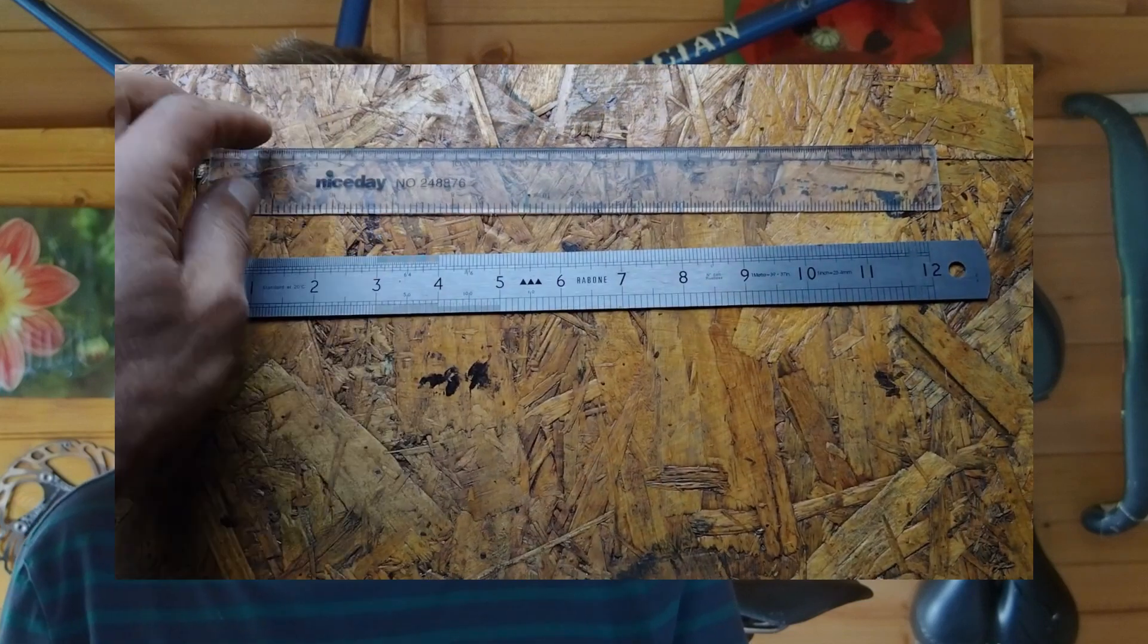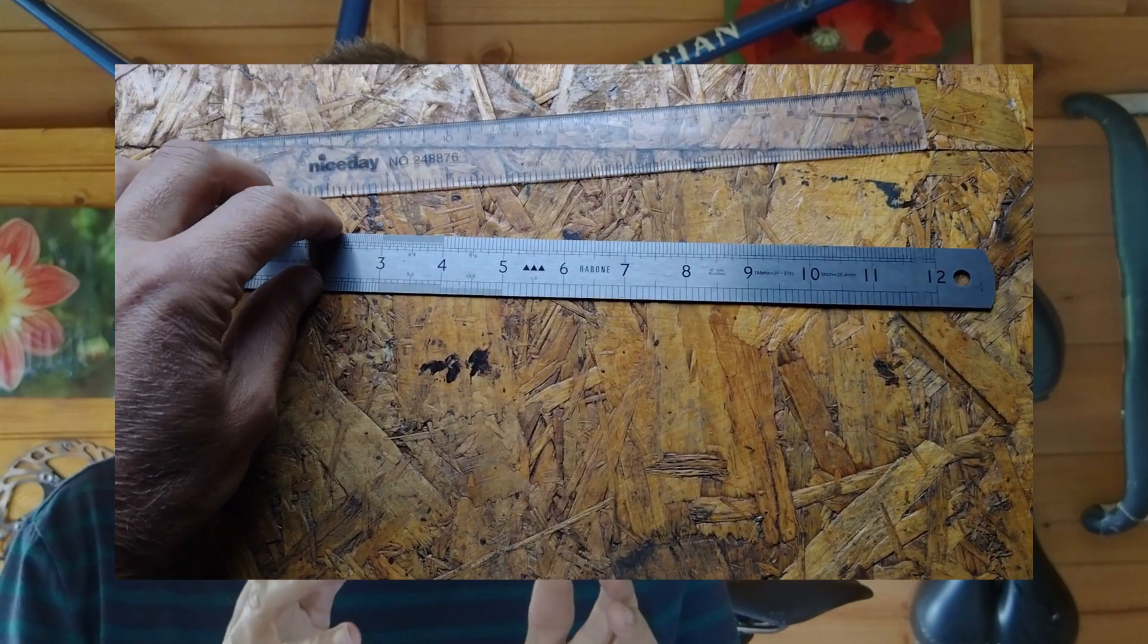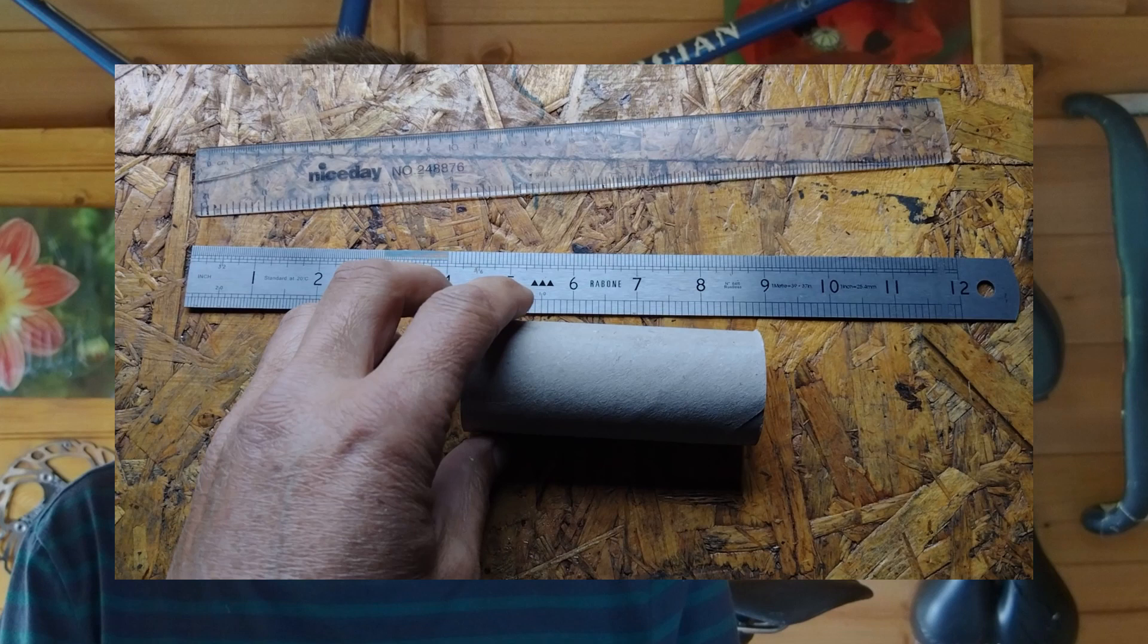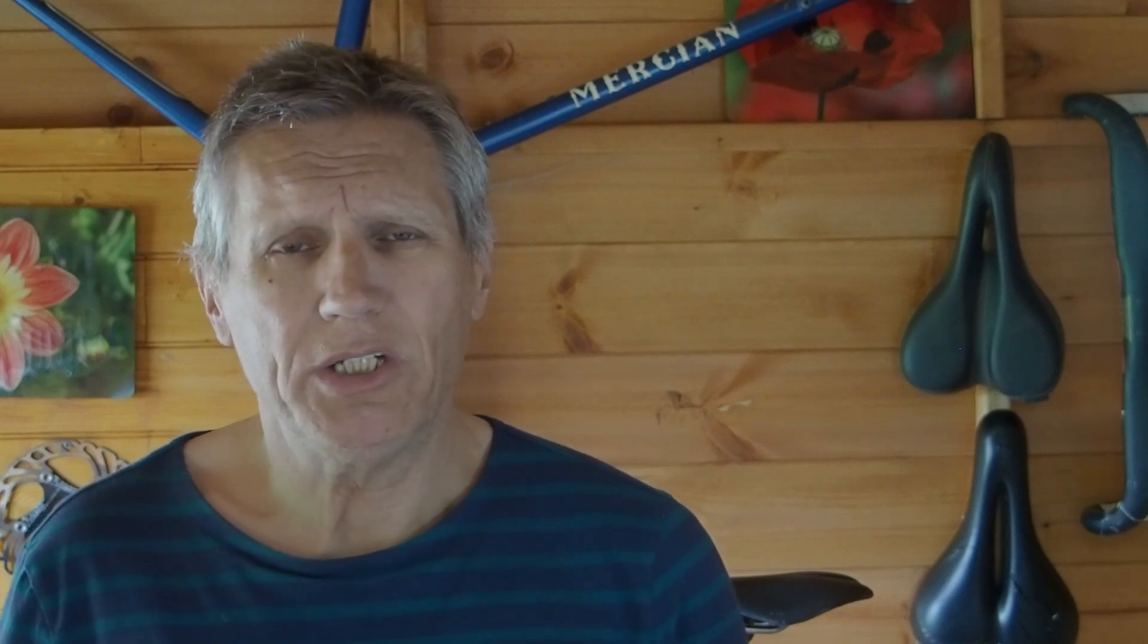So in this video I want to explain to you using these simple props - a pair of rulers, one plastic and one steel, and the tube from the inside of a toilet roll - just what those differences are and what they might mean for your bicycle parts. I'll be talking specifically about crank sets, but the principles also carry over to many other bicycle parts.